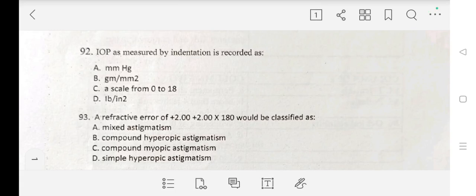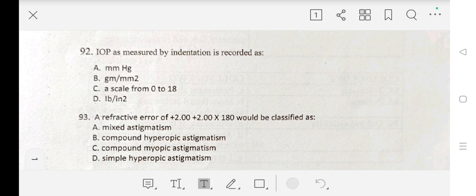Hello friends, today we will continue with previous year questions. Question number 92 is: IOP as measured by indentation is recorded as A. mmHg, B. gm per mm square, C. a scale from 0 to 18, D. lb per mm square. Our answer is A. mmHg.